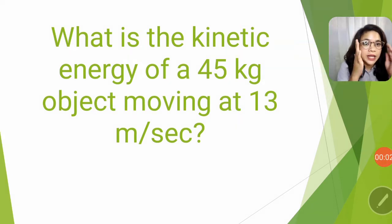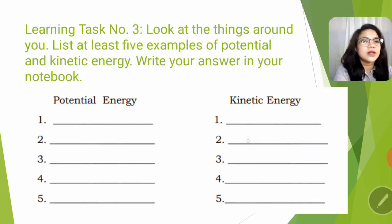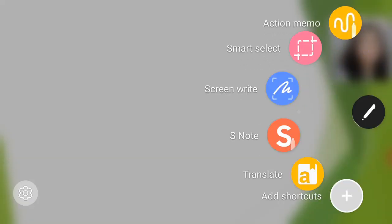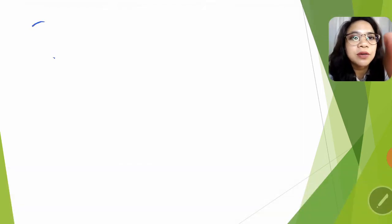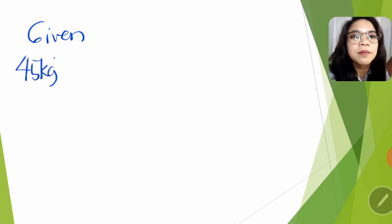Now let's compute the value of kinetic energy of a 45 kilogram object moving at 13 meter per second. We're going to follow the GRESA method: given, required, equation, the solution, and the final answer. GRESA method. Let's proceed. Given: 45 kilogram, that is the mass. 13 meter per second, that is the velocity. What is required? Kinetic energy siyang hinahanap. Ano naman ang ating kailangan formula? That is kinetic energy is equal to one half mv squared. So paano ang solution?